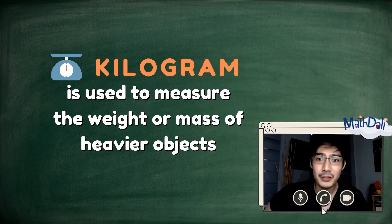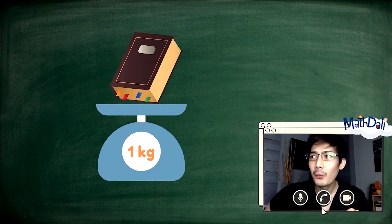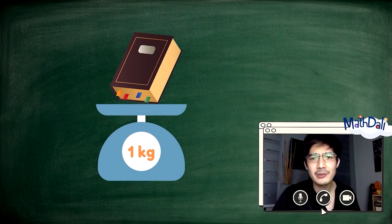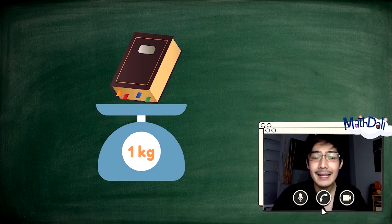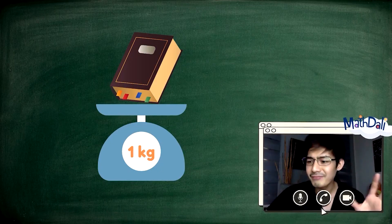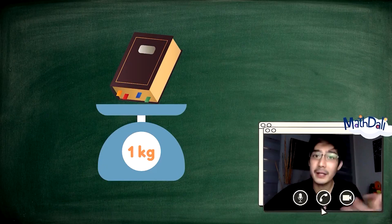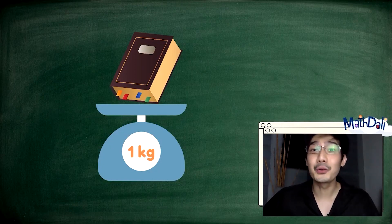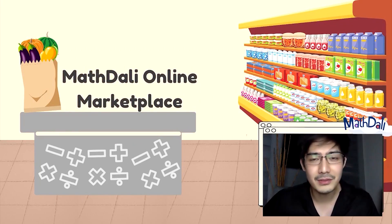Ginagamit natin ang kilogram to measure the weight or mass of heavier objects. Yung dictionary is about 1 kilogram. Maraming bagay sa paligid natin that can be measured by grams and kilograms, at maraming situation in our daily lives kung saan natin nagagamit yan — kahit sa pamamalengke, kapag sinusukat ang timbang, when you buy meat. Let's test our skills sa pag-convert ng grams at kilograms.